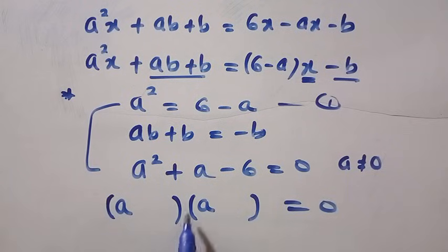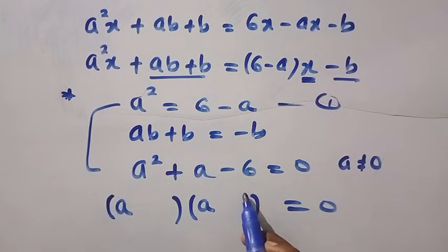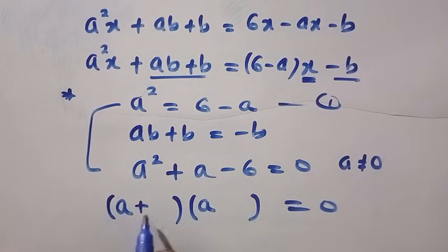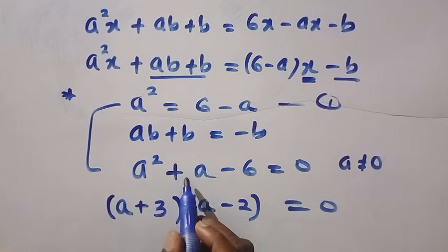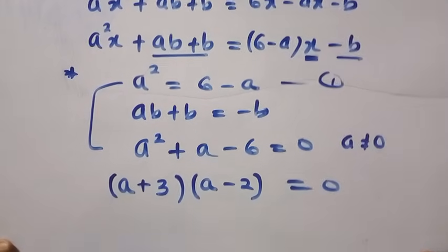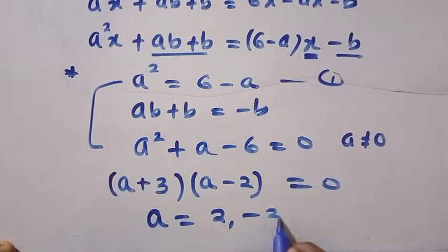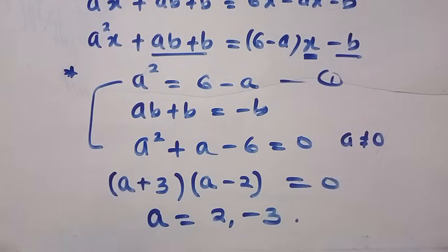This is a, this is a. I will find two numbers that the sum will be 1 and the product will be minus 6. This side, I am going to put 3 and this side, I am going to put 2. 3 minus 2 is 1, and 3 times minus 2 gives us minus 6. Therefore, a here equals 2 and minus 3.